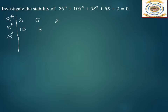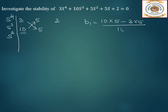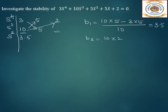New row for s²: b1 = (10×5 − 3×5) / 10 = 3.5. Next element: 10×2 / 10 = 2. So the s² row entries are 3.5 and 2.